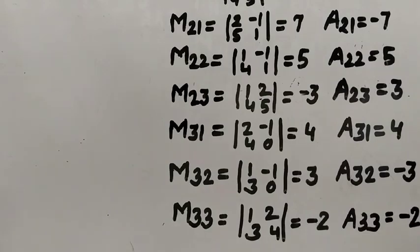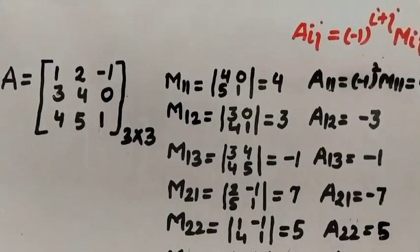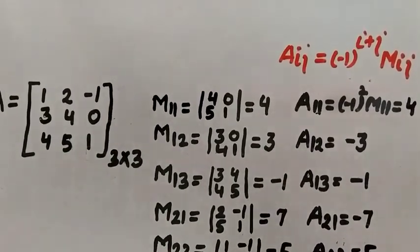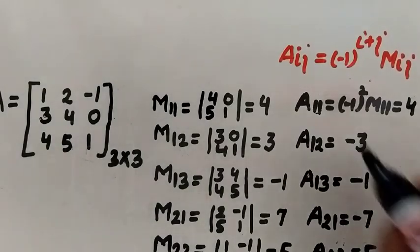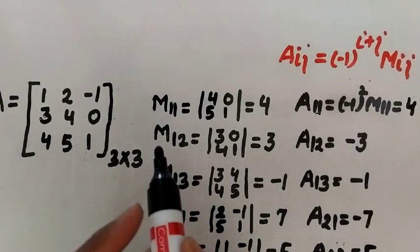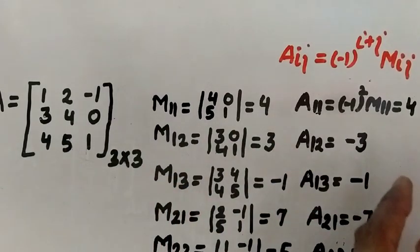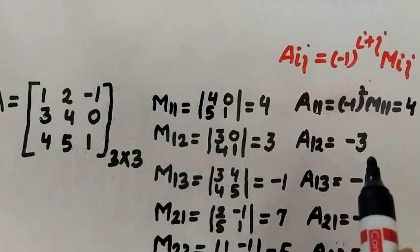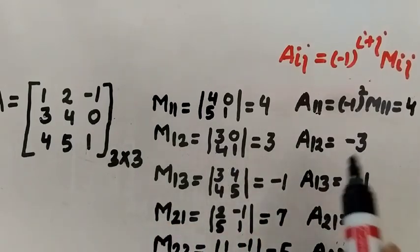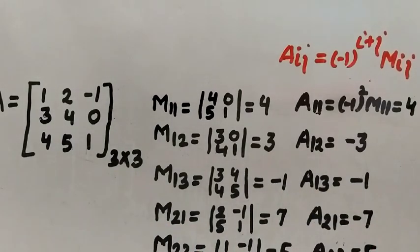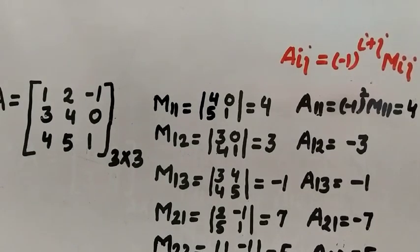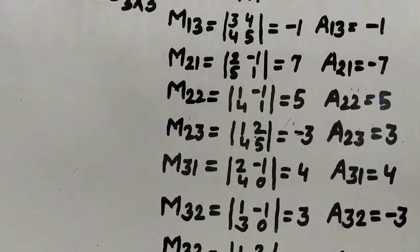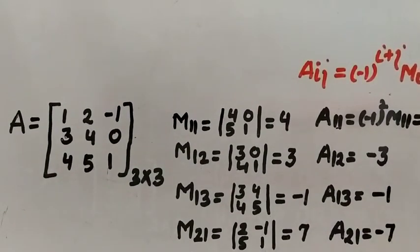It is very simple: once you have the minors, cofactors come quickly. The rule is: if the sum of the suffixes (i+j) is an even number, the cofactor equals the minor as-is; if the sum is odd, just change the sign of the minor. So if the minor is positive, the cofactor becomes negative, and vice versa.